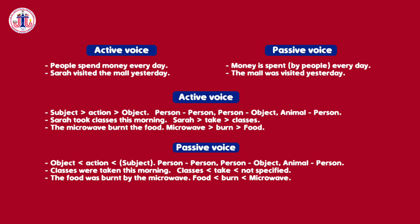The subject can be a person and the object an object, or the subject can be an animal and the object a person — it doesn't matter. It is something or someone performing an action that affects someone or something. For example: 'Sarah took classes this morning' — the subject is Sarah, the action is take, and the object is classes. 'The microwave burnt the food' — the subject is the microwave, the action is burn, and the object is the food.